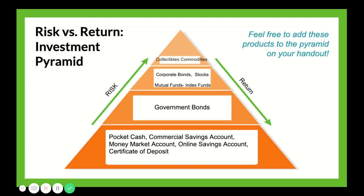At the top level with the highest amount of risk and potentially the highest amount of return are collectibles or commodities. These are items like copper, coffee, oil, raw materials, or agricultural products. Collectibles are things you might collect, like baseball cards. They're high risk because you never know what their value will be over time — consider the Beanie Baby bust of the 90s — but you may end up with a great return as items can end up being worth much more than they originally were.